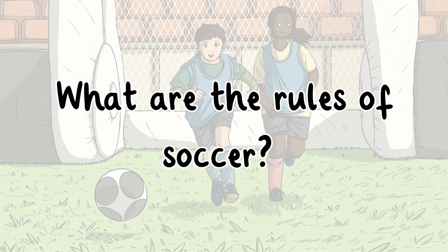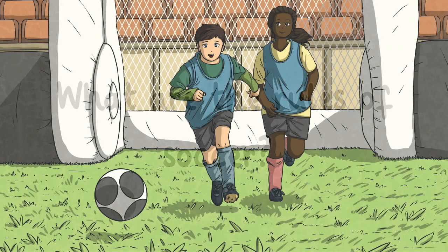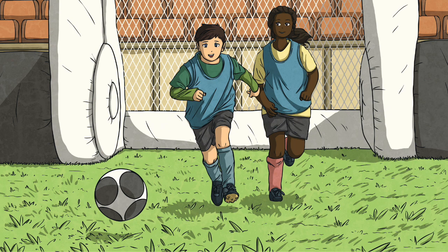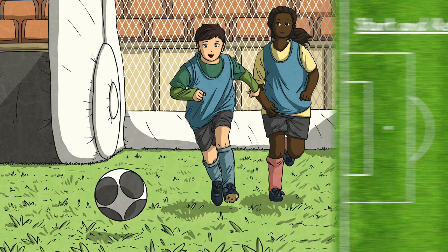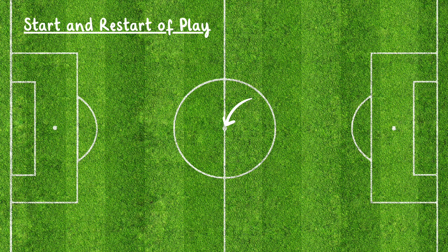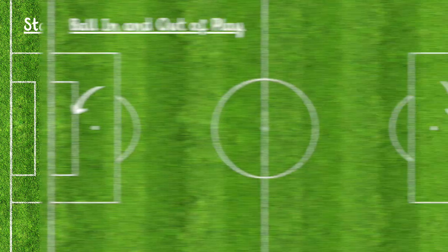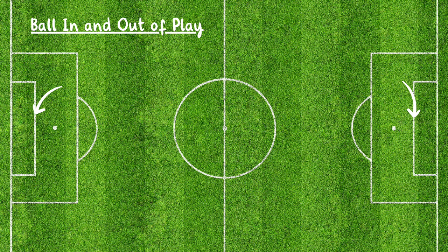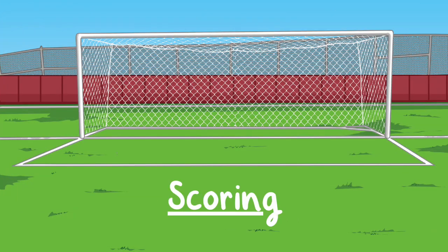If you're new to the game, soccer language can be quite confusing. Here's a quick explanation of common soccer words to help you gain a better understanding of soccer, its rules, and terminology. Start and restart of play: the game begins with a kickoff from the center circle and restarts the same way after a goal is scored. Ball in and out of play: the ball is out of play when it completely crosses the goal line or touch line. Scoring: a goal is scored when the entire ball crosses the goal line between the goal posts and under the crossbar.